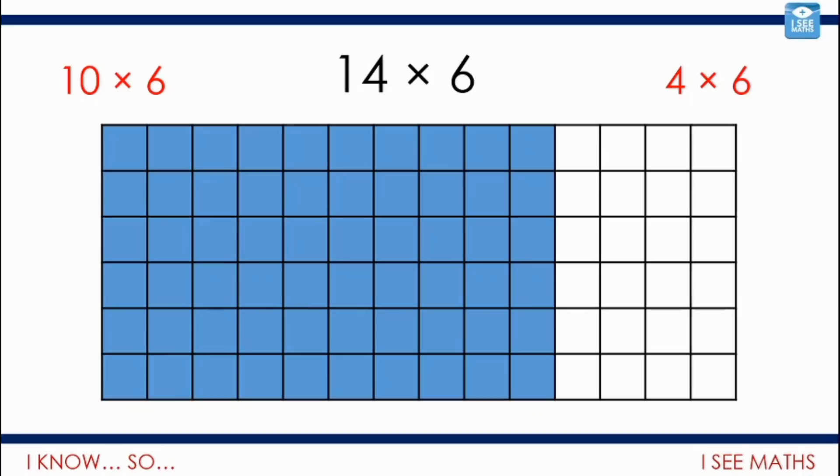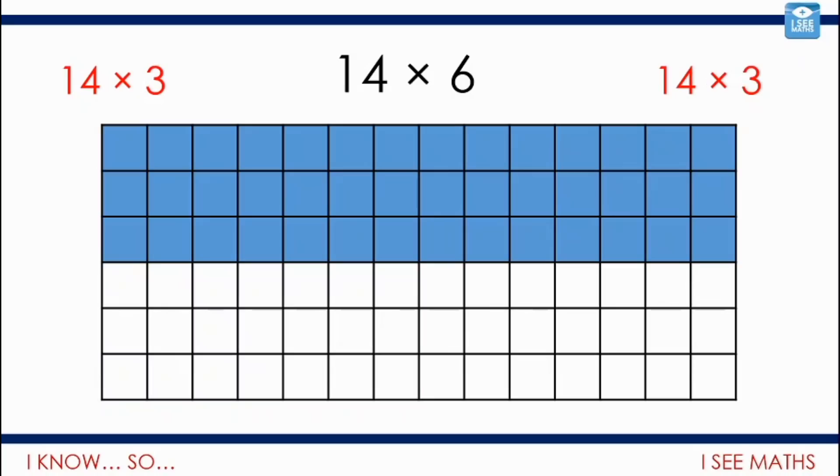But I don't have to break it down like that. I mean, like I said, I could break it down into 2 lots of 7, 6's. So, just split the 14 in half. There'll be 42 squares in each section there. Or maybe I don't even split up the 14 at all. I just do 2 lots of 14 times 3. There's a few things that can be done there.